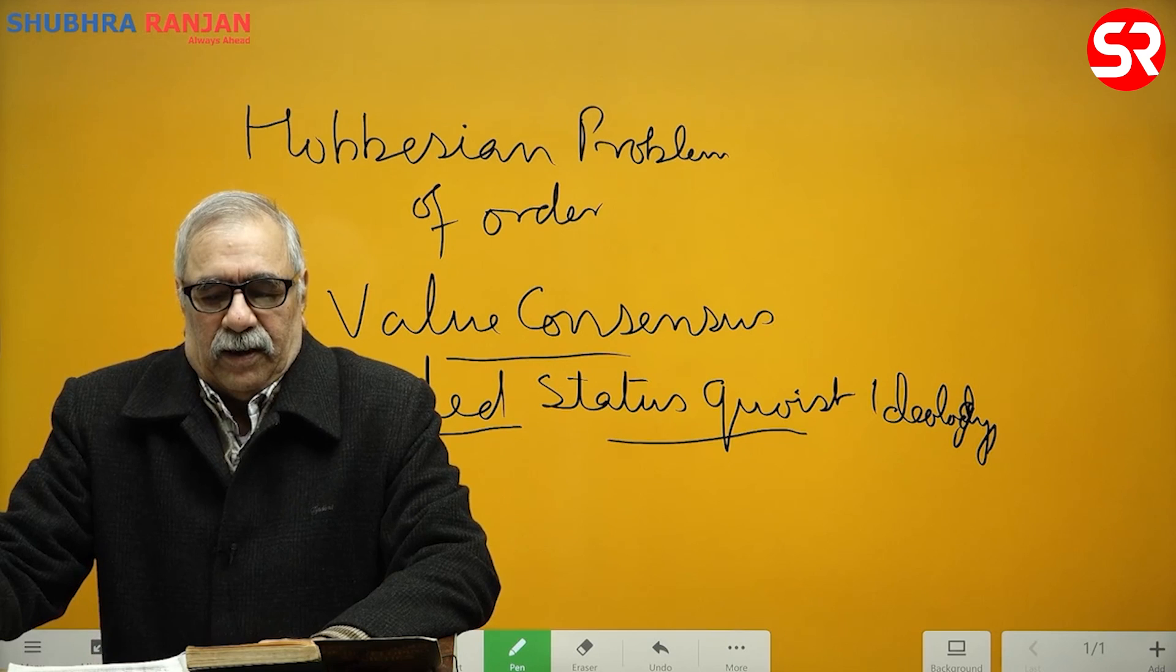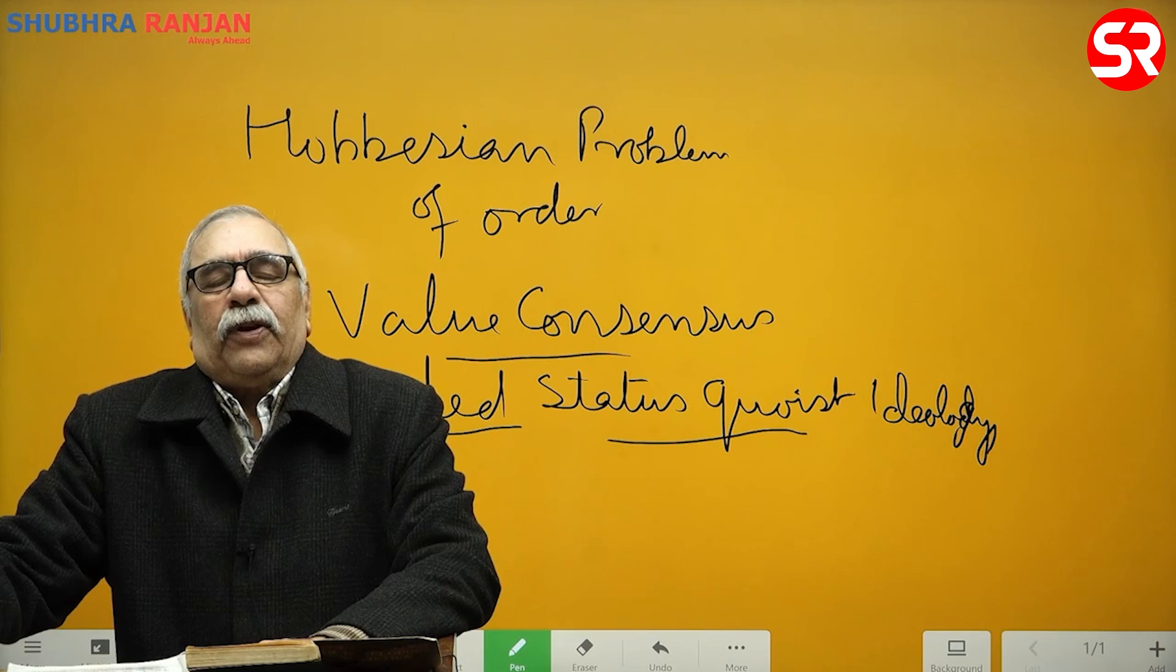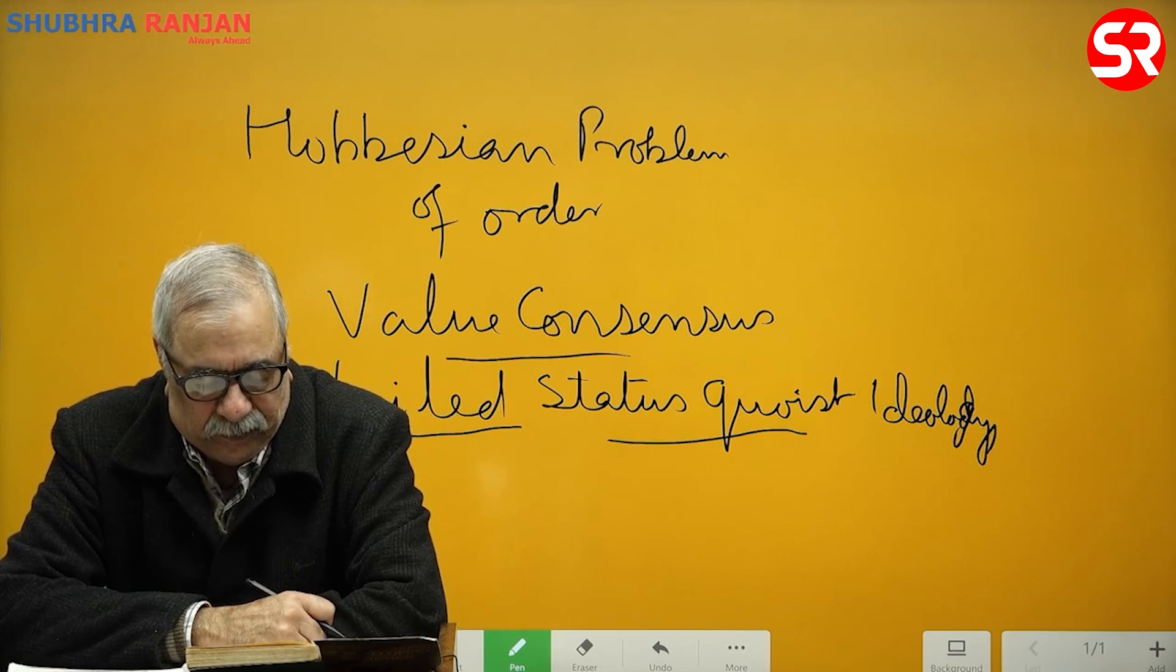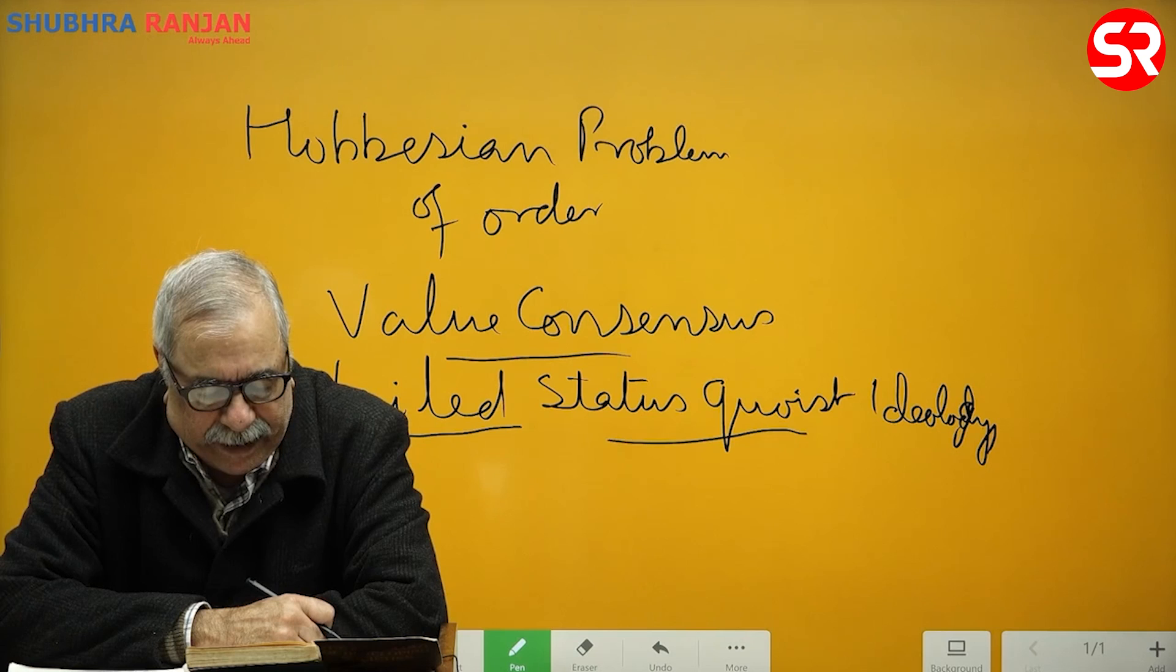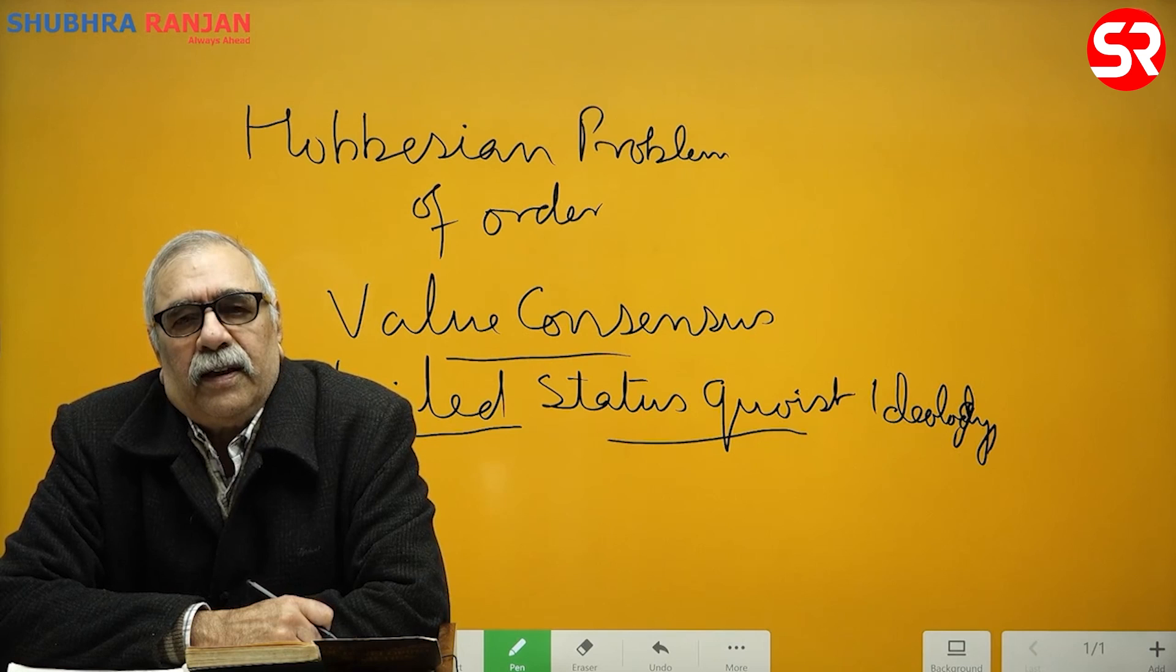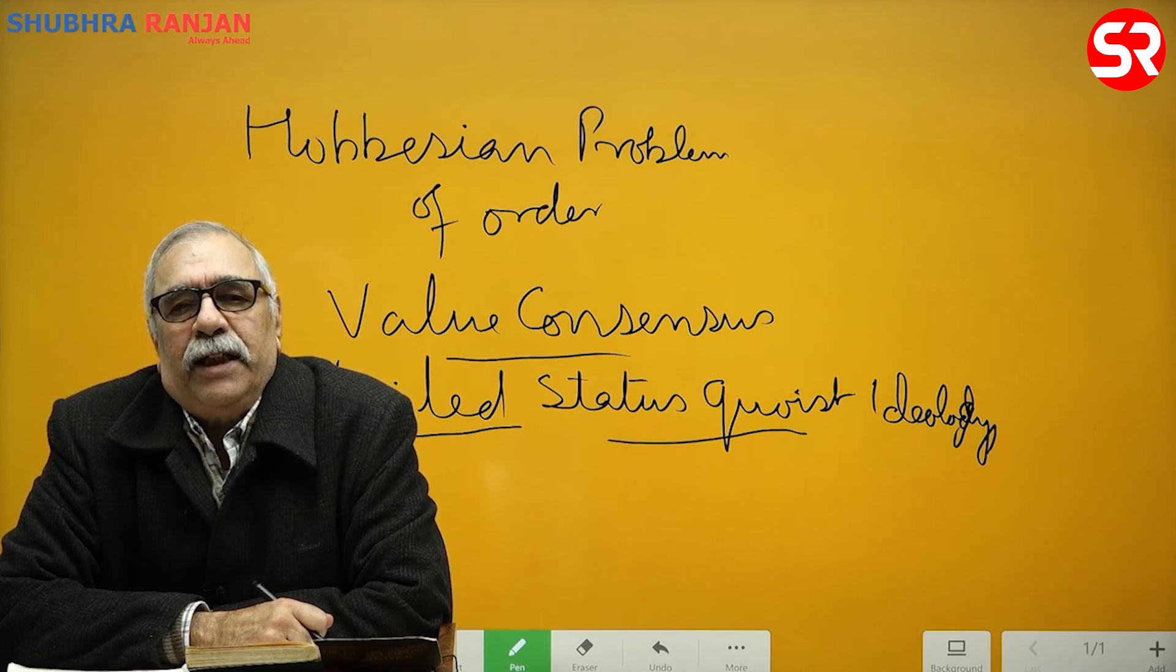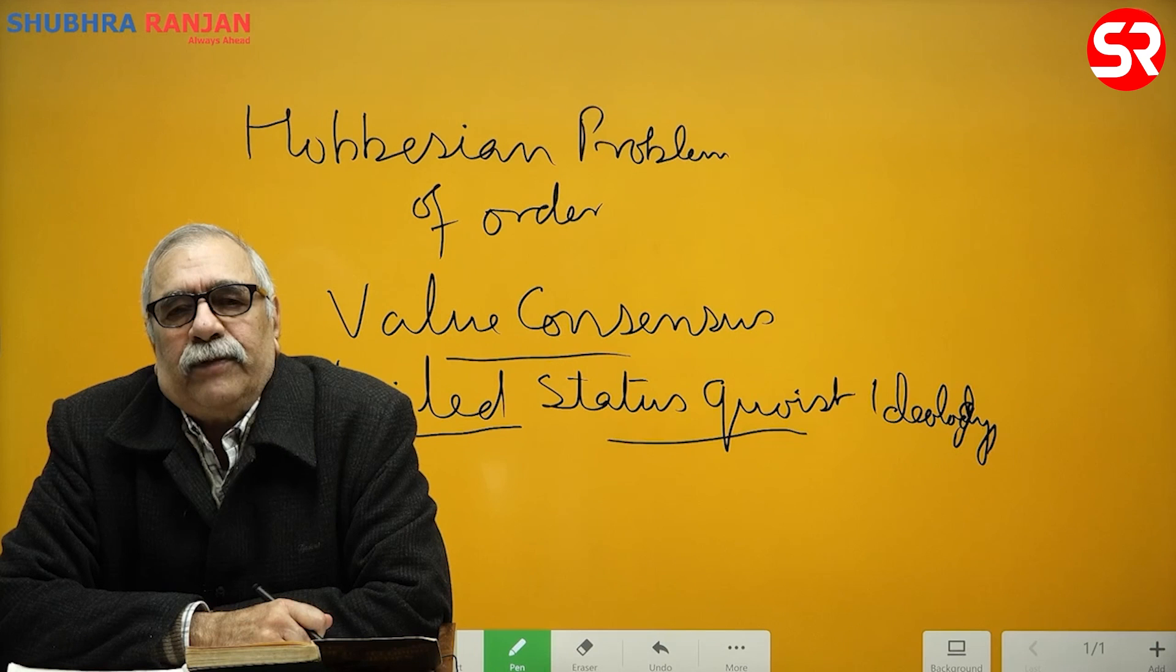Parsons adapted this concept to sociology through the concept of generalized medium of exchange. Each subsystem of society has a generalized medium of exchange, and the circulation of that generalized medium of exchange in the subsystem regulates and controls the functioning of the subsystem.